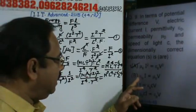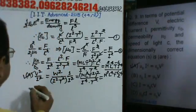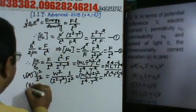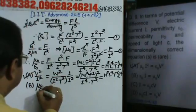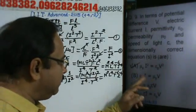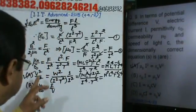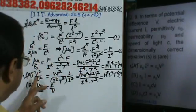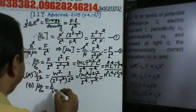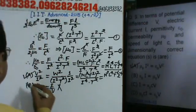For option B: μ₀/ε₀ = I/V. But we established that μ₀/ε₀ = V²/I², so I/V is clearly not equal to V²/I². Therefore option B is wrong.